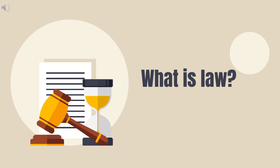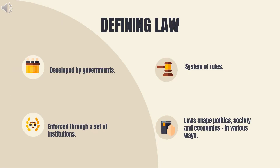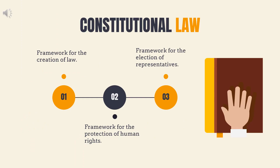We begin by unpacking this lecture by understanding what is law. Laws and acts are developed by the government. Law is defined as a system of rules usually enforced through a set of institutions to regulate human conduct. It shapes politics, economics and society in many ways. There are different types of laws, namely contract law, property law and trust law, to name a few.